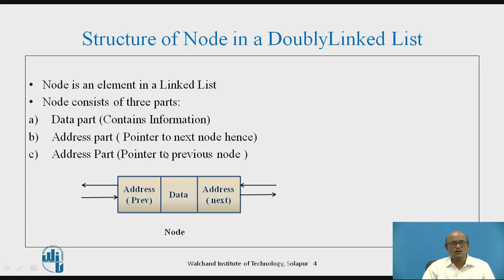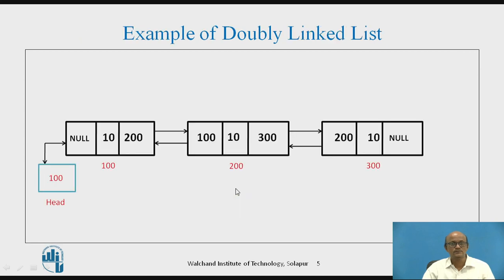One more difference we see here: there are two arrows, meaning traversal in a doubly linked list is possible forward and reverse. This is a simple example of a doubly linked list where three nodes are shown — the first node, the second node, the third node — and there is a pointer pointing to the first node of the list, called either head or start.